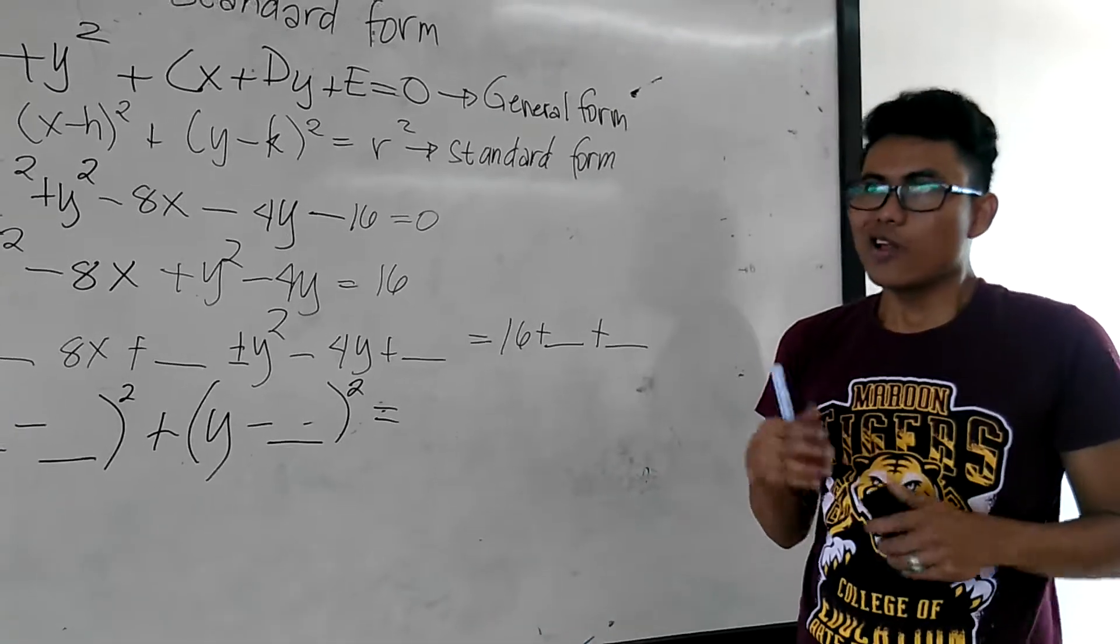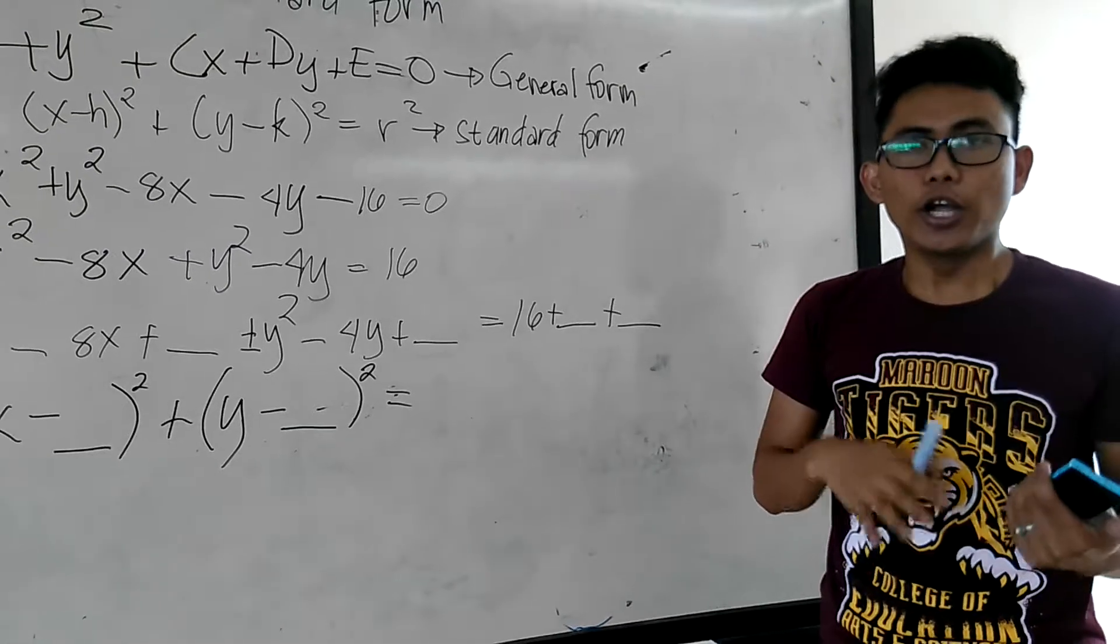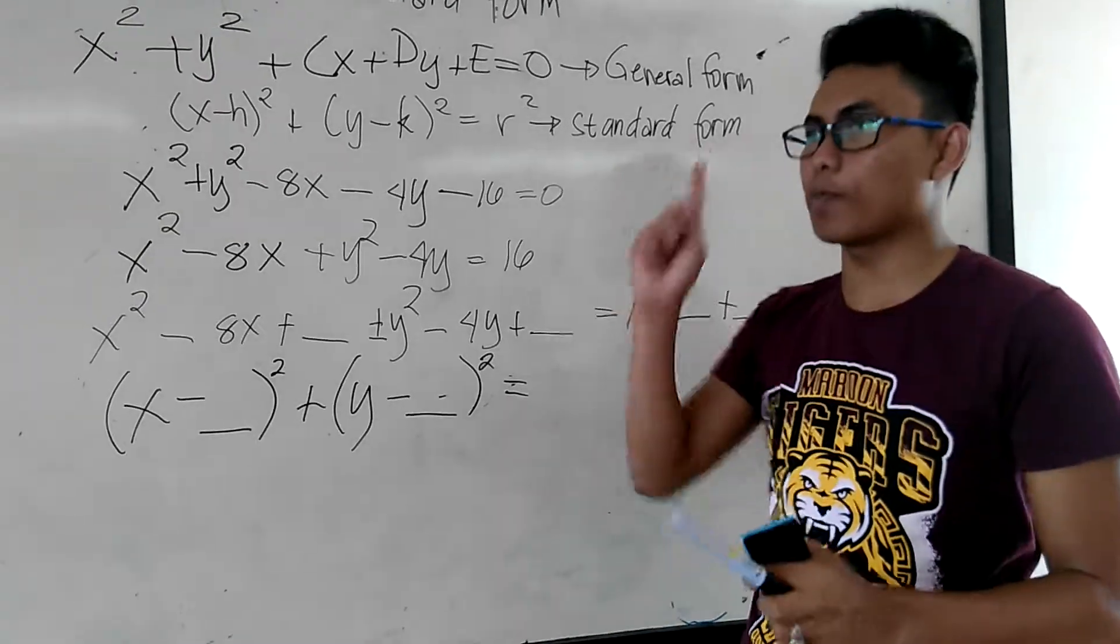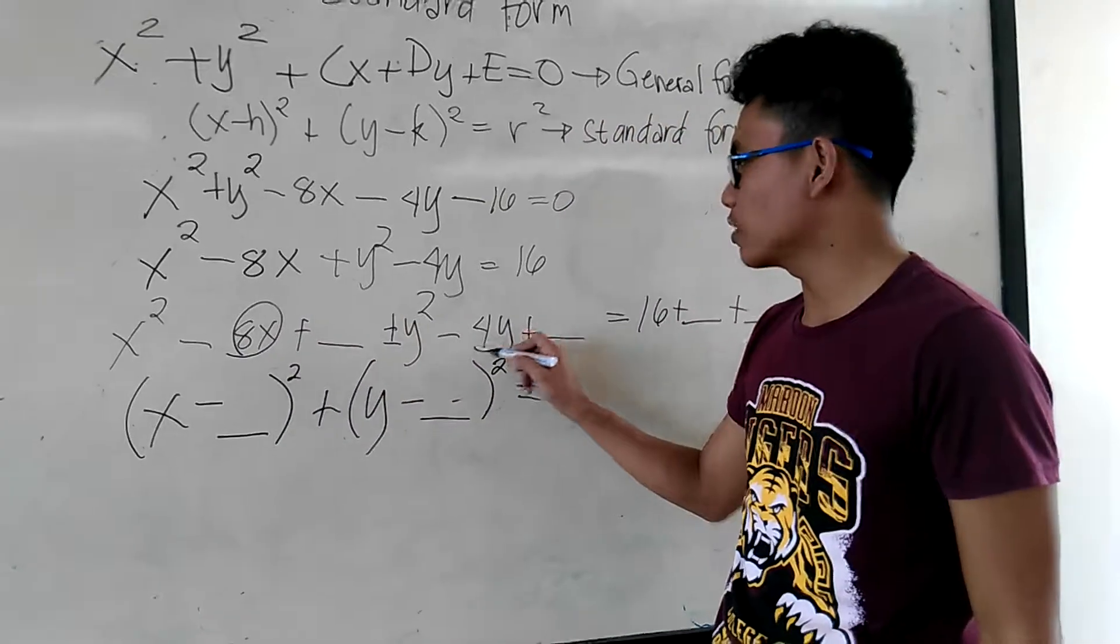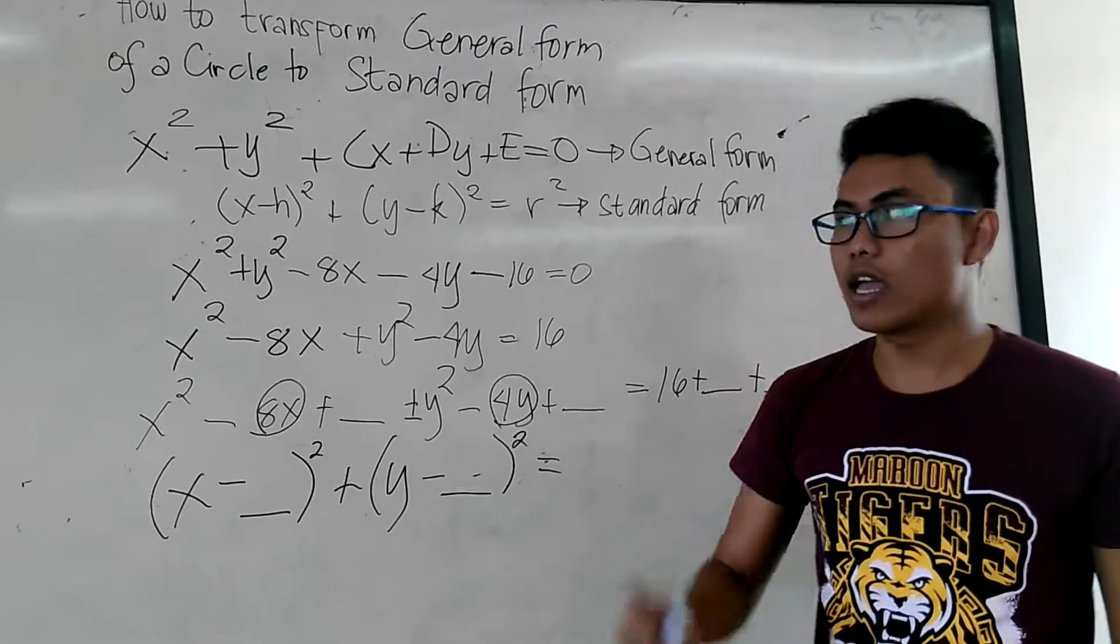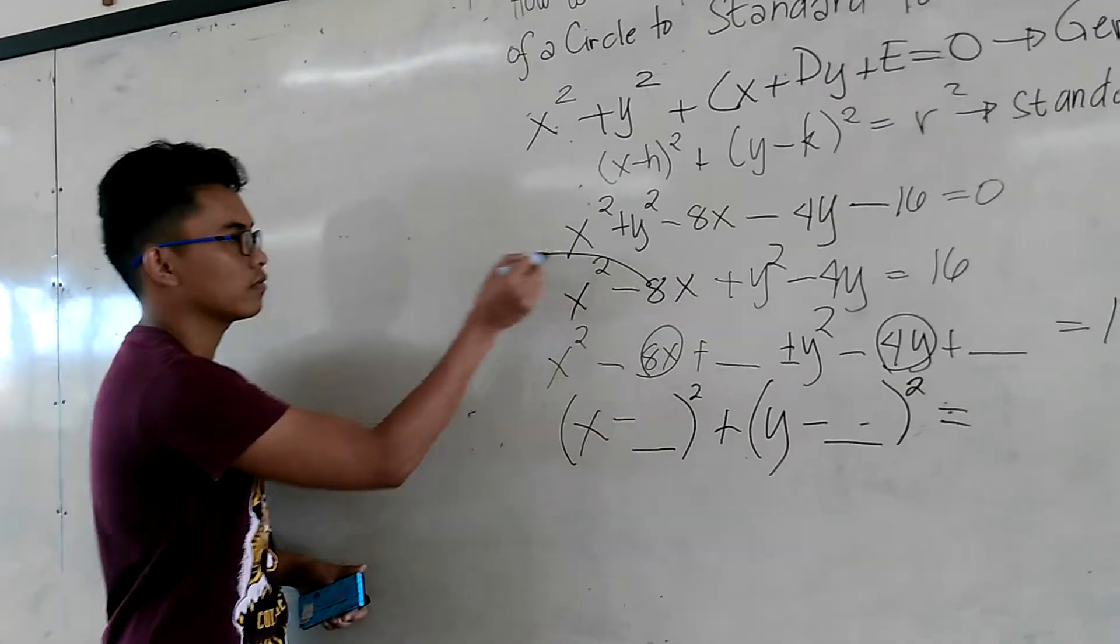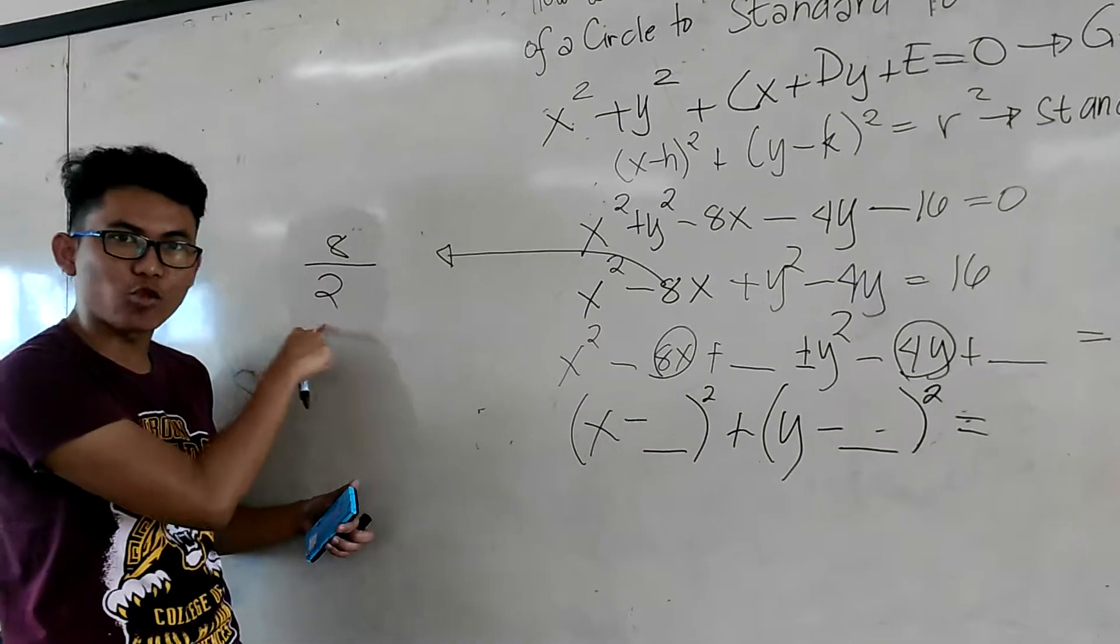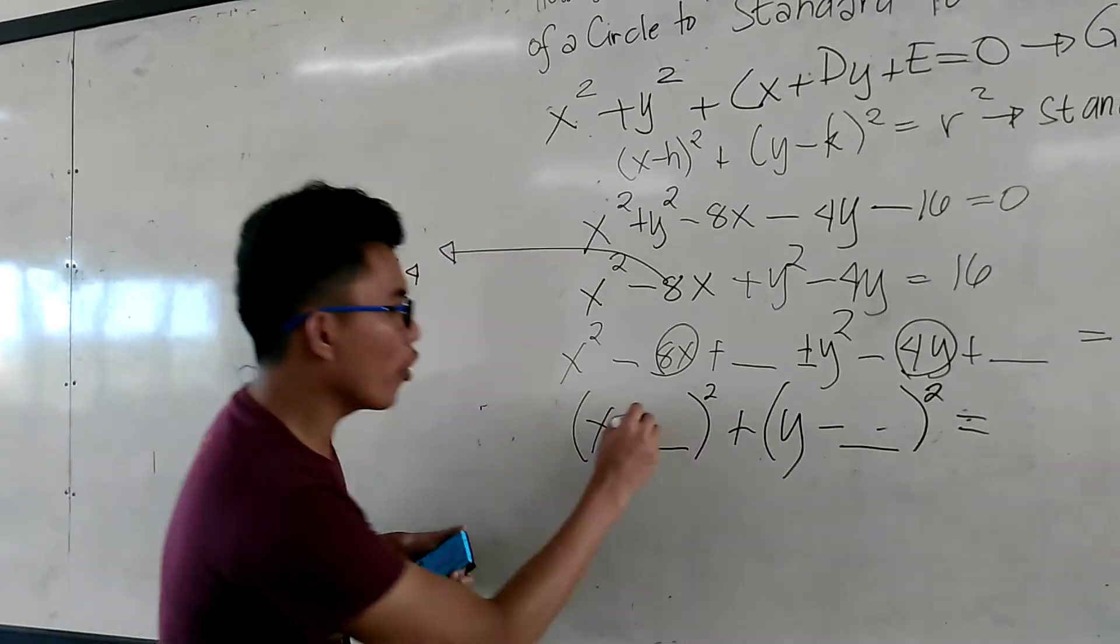So now, we have to use completing the squared. You need to complete in order to have a perfect squared trinomial. At ang i-perfect squared natin is ito po. Yung itong number 8 natin. At saka yung 4y. Okay? So yung mga constant lang po nila. Okay? So start. So, half of 8. Half, half po yan po. Half is equal to 4. So, 4 dito. 4 dyan.